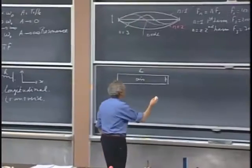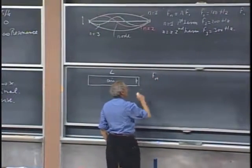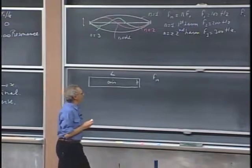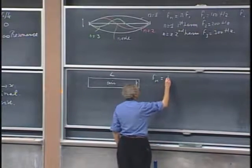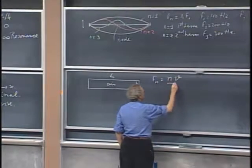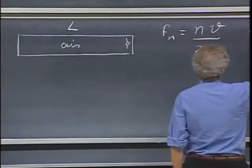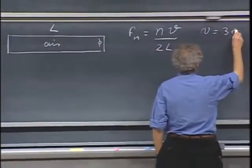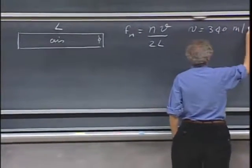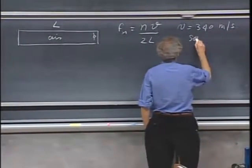In this case, the Nth mode, the Nth harmonic, is given by N times the velocity of sound divided by 2L. And V is about 340 meters per second at room temperature, so it is the sound speed.